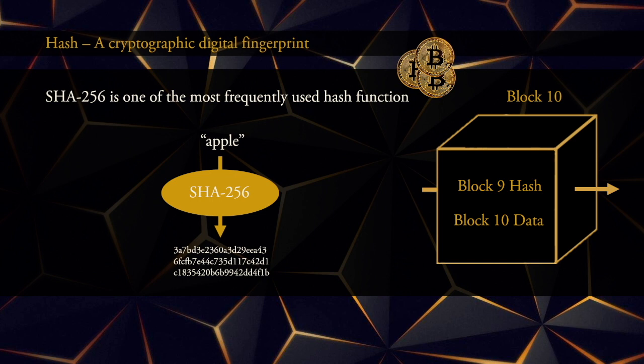The most commonly used hash function is called SHA-256, and it can take any string of symbols and turn that into a string of 256 bits. The Bitcoin blockchain uses this technology. Writing a string of 256 bits as a list of 0s and 1s takes a lot of space on a slide, so equivalently I will use hexadecimal numbers having 64 digits.